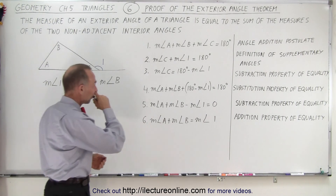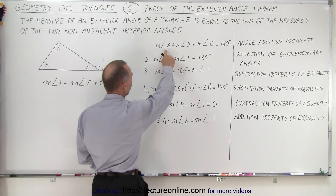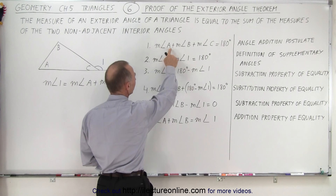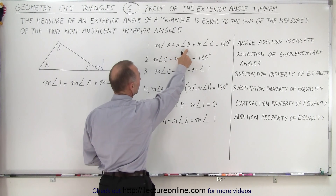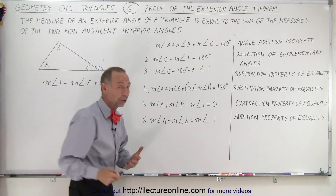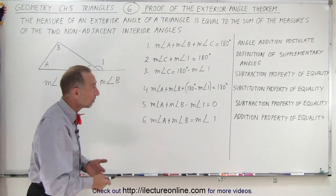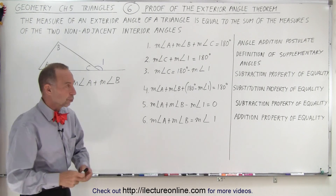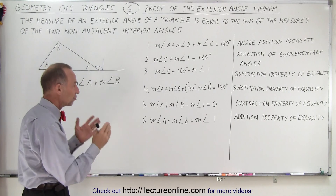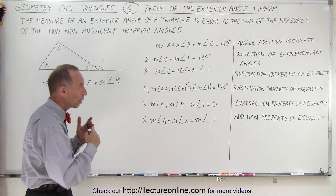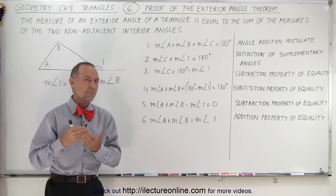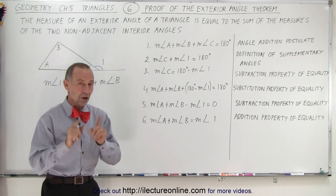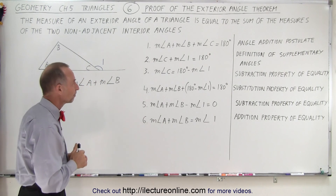We start with the first statement. We claim that the measure of angle A plus the measure of angle B plus the measure of angle C add up to 180 degrees, because that is the angle addition postulate. We know that for any triangle, regardless of its shape, the sum of the measures of the three interior angles must add up to 180 degrees.